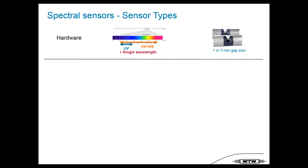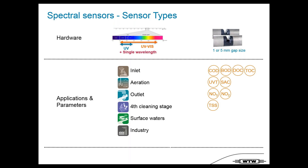The important thing to understand is that we have sensors for different applications: inlet, aeration, and outlet of wastewater treatment plants, the fourth-stage cleaning, surface waters, and industrial applications. Across all these applications we can measure carbon parameters — COD, BOD, DOC, TOC — as well as UVT, SAC, NO3, NO2, and TSS. We have sensors for almost any combination of these.